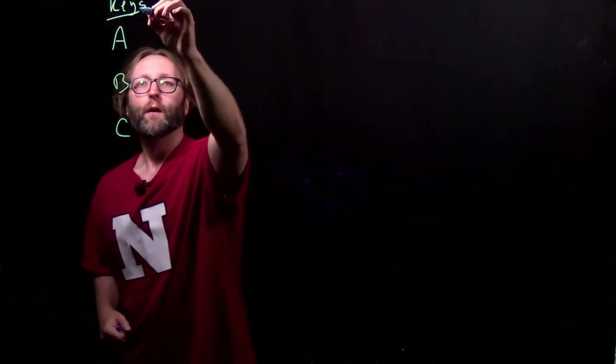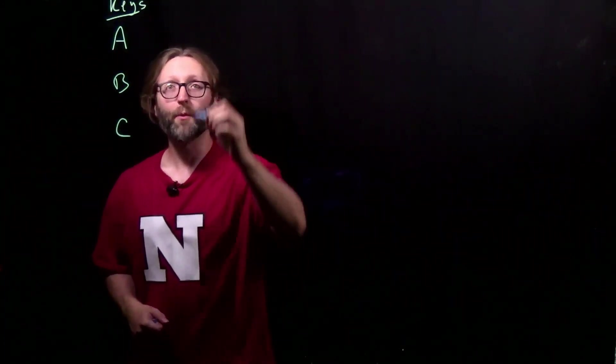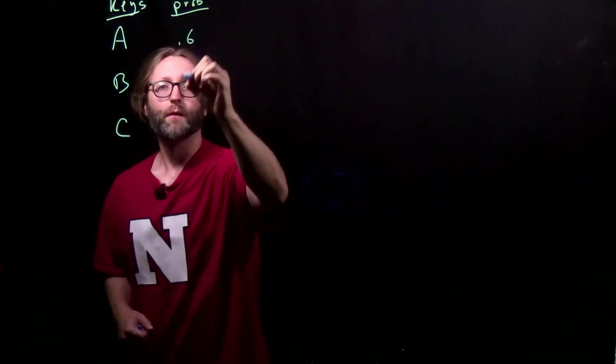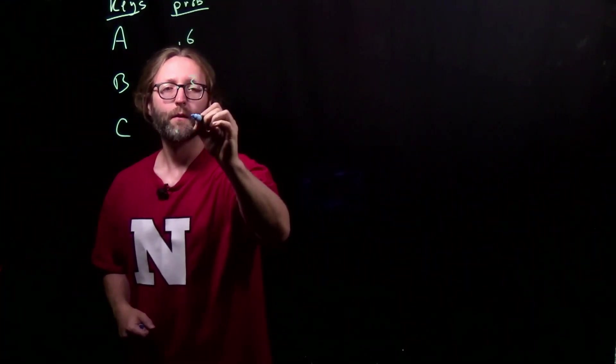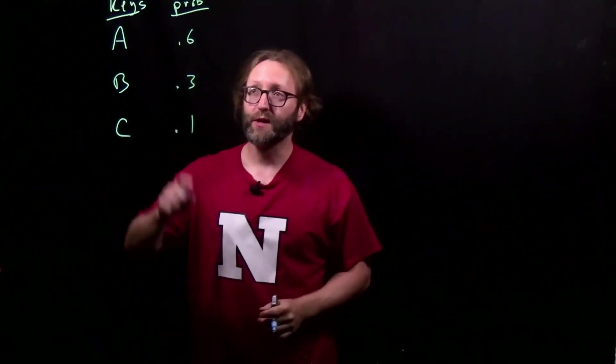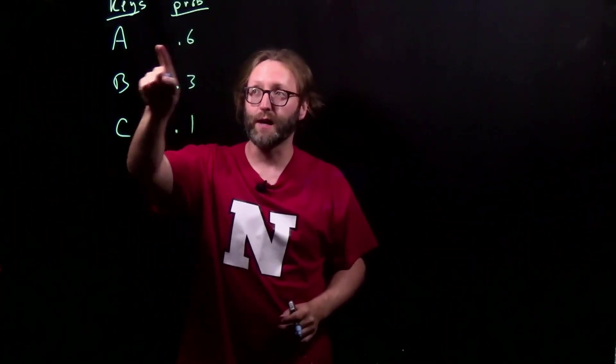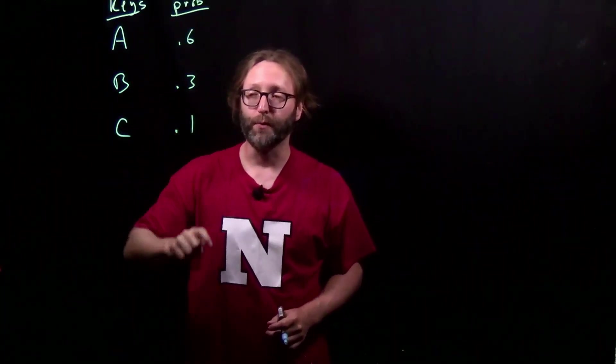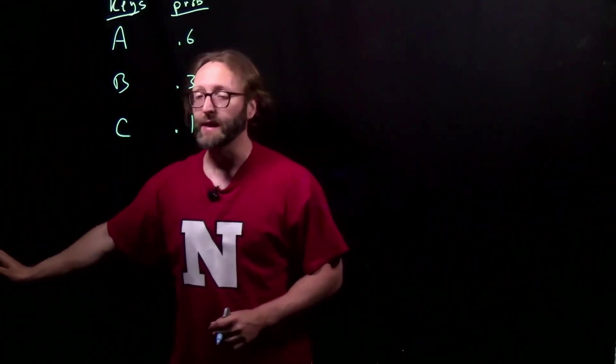Suppose that we have a very simple input with just three keys, A, B, and C, with a probability distribution. The interpretation here is that 60% of the time, you're searching for key A, 30% of the time you're searching for B, and only 10% of the time you're searching for C.